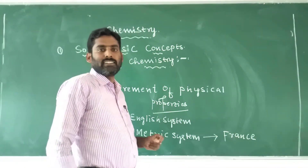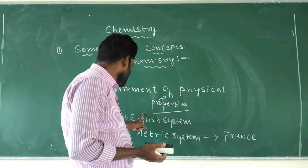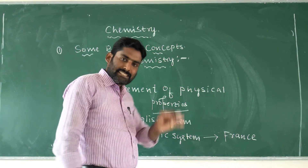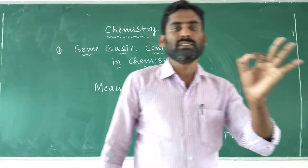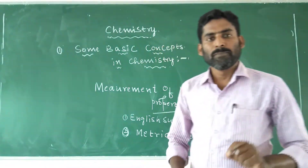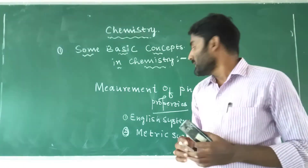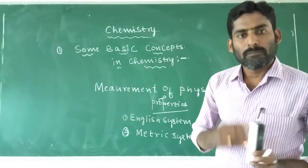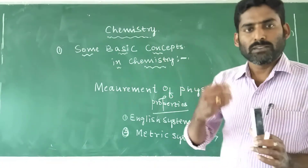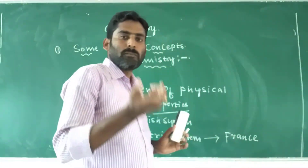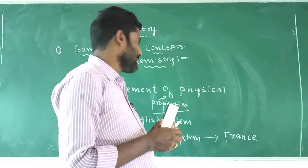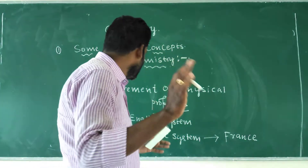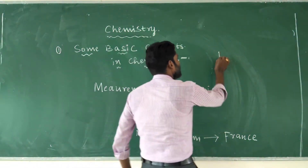In later days, in addition to the English system and metric system, a standard system was originated and established to measure the quantitative measurement of physical properties of matter. This standard system was established after 1960.